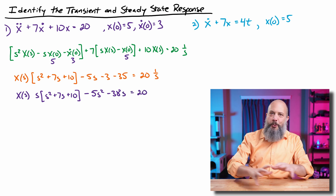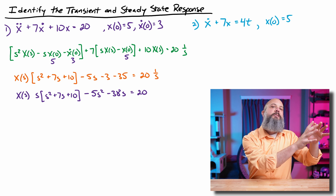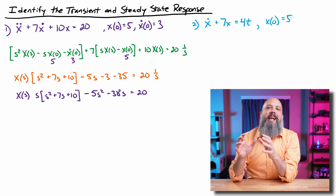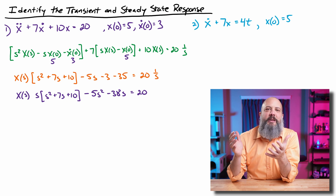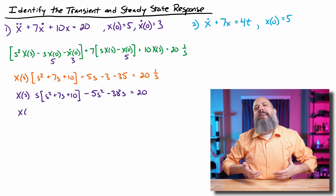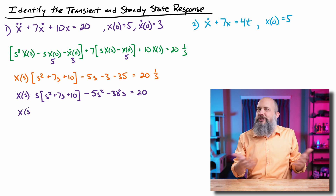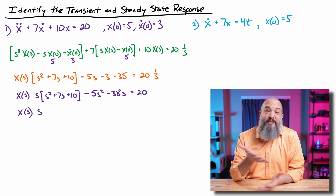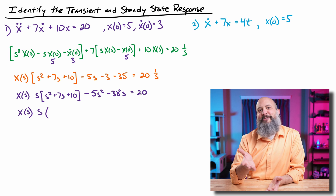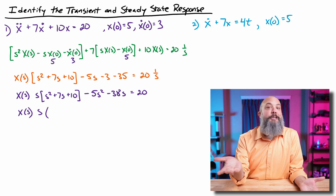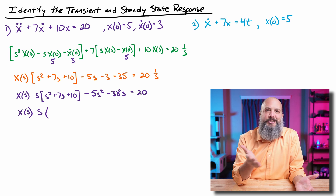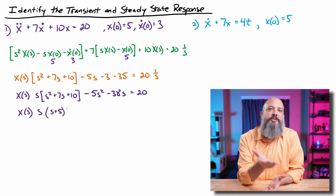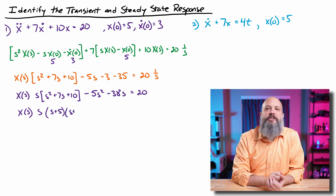So now I've got x(s) times s times the characteristic equation, and 5s squared plus 38s equals 20. Take the initial conditions and move them over to the other side so I've just got x(s) on one side. If you're in an engineering class doing a homework problem, your professors are probably going to give you factors that work out to be integers because it's a little bit easier than decimals. If it doesn't work out, you can just use the quadratic equation to solve for the factors of your quadratic expression.